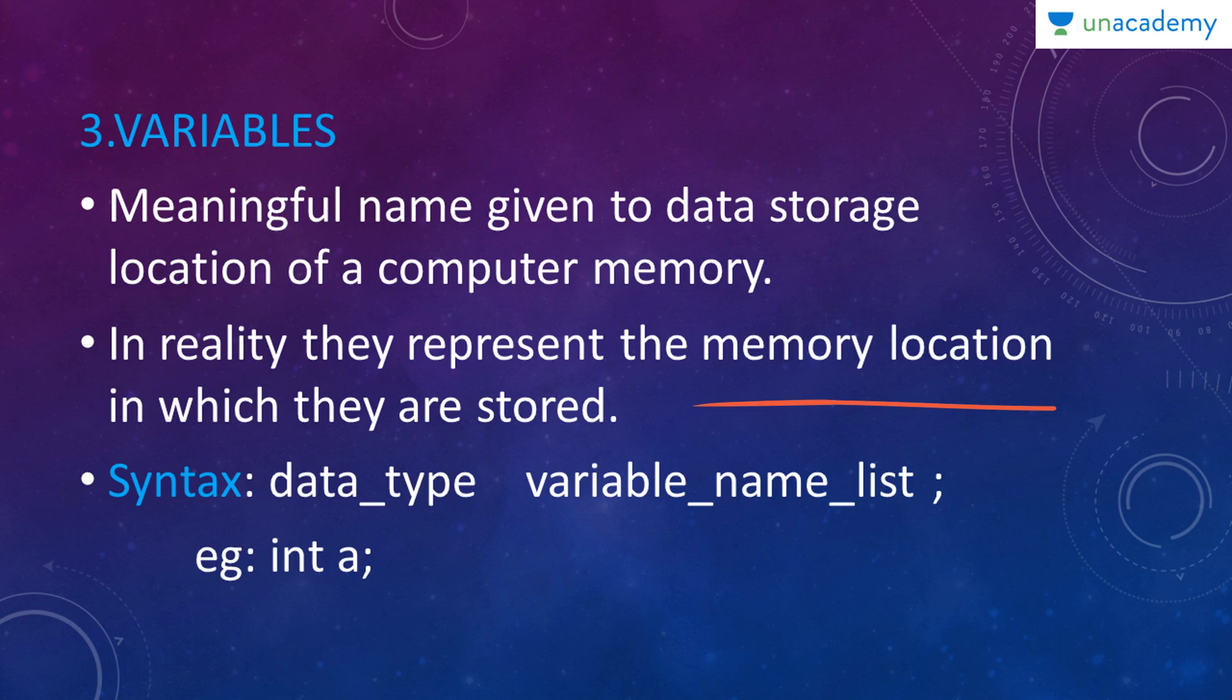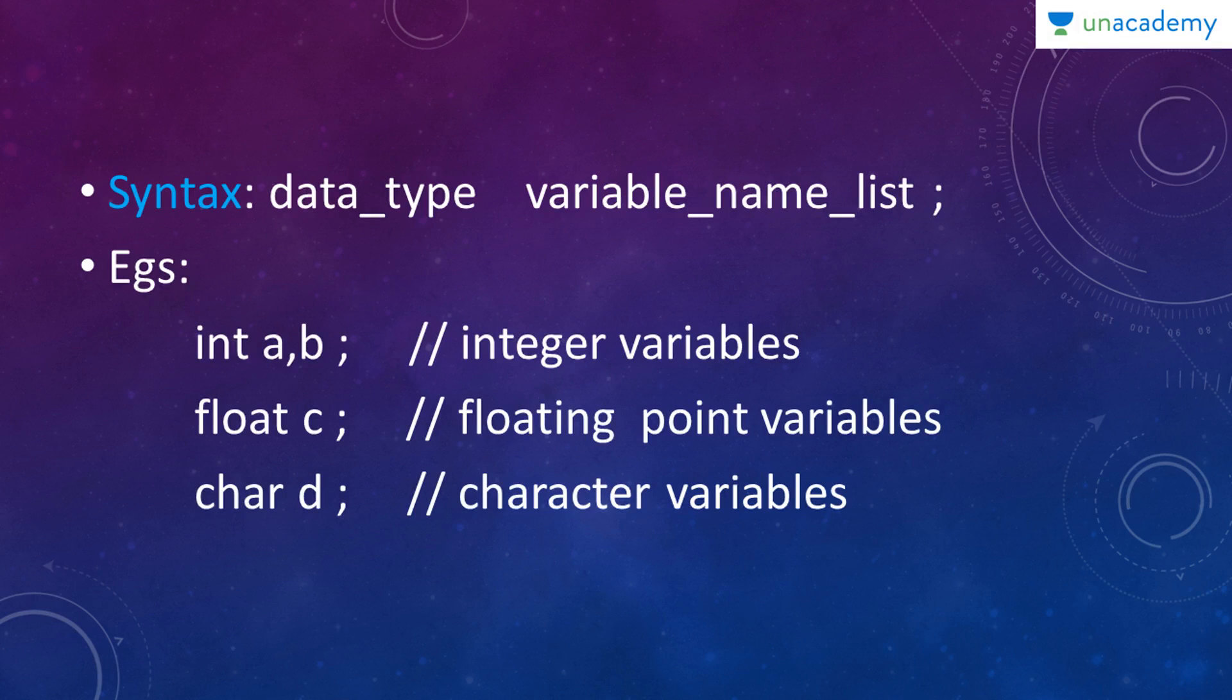Syntax is data type followed by variable name followed by semicolon. Example is int space a semicolon. Int is the data type. There are a few more variables like integer variables, floating point variables and character variables. They denote the value which they hold. Like a and b are of type integer and they are called as integer variables. Similarly, we have float c and character d.